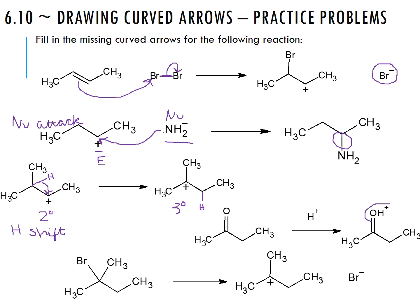The next problem has an oxygen and a hydrogen, and in the product they are now bonded together. Drawing the lone pairs on that oxygen and going from the oxygen right onto that hydrogen shows the bond forming between oxygen and hydrogen. This is a proton transfer.